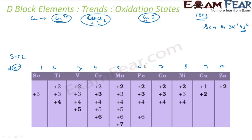For 6 plus 2, technically it should be 8 oxidation states, but it doesn't exhibit 8 because losing 8 electrons is a big deal — it's not an easy task. For 7, technically it should be plus 9, but again losing 9 electrons is not easy. So the maximum oxidation state is plus 7. Technically it can have 10 plus 2 = 12 oxidation states, but that would impact the stability of the whole atom.